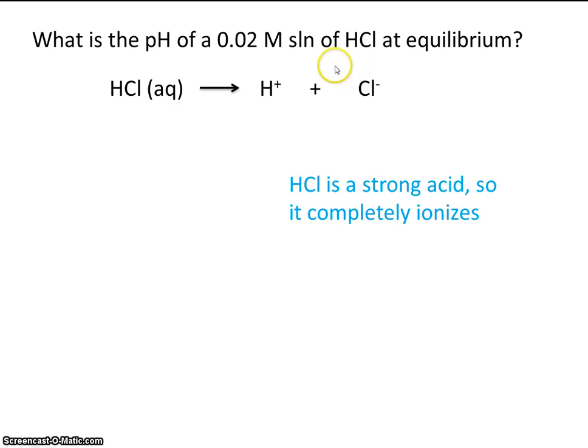Okay, so this equilibrium lies all the way to the right. In fact, there really isn't an equilibrium here. That's why I've only drawn the arrow as going to the right. That's why it's considered a strong acid, because all of this splits up into these products.